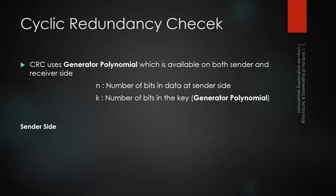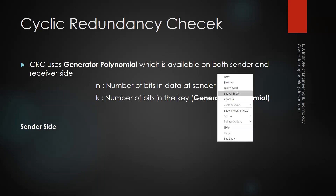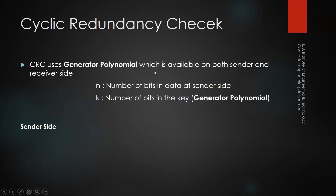In the CRC method, it uses a generator polynomial which is available at both the sender and receiver side. The generator polynomial is also called the key. The value of the key is already known by both sender and receiver. The size of the data to be sent is represented by n, and the size of the key or generator polynomial is represented by k.